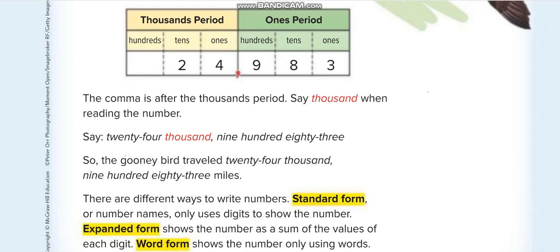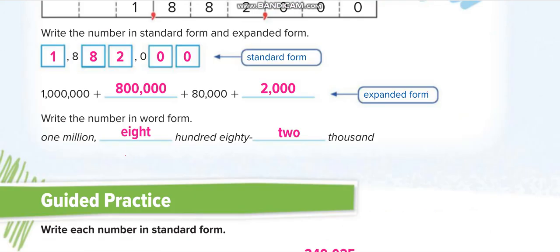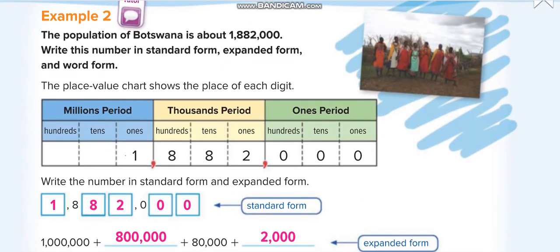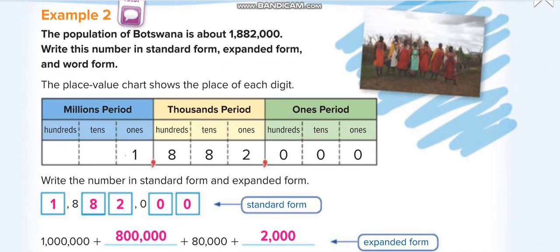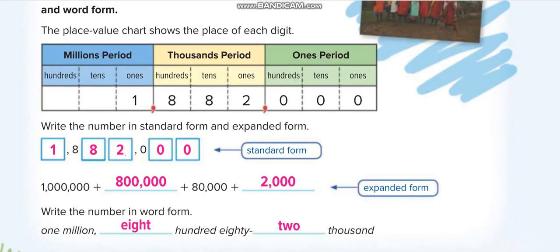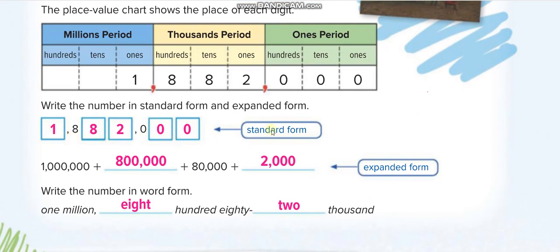Let's solve these one by one. The population of Botswana is about... let's read it: the first period is ones, the second is thousands, and the third is millions. So we have 1 in the millions period, eight hundred eighty-two thousand, and zero in the ones. This is how we write the number in standard form: 1,882,000.